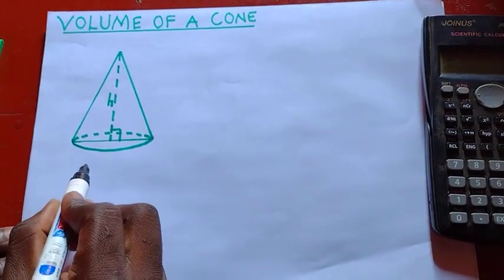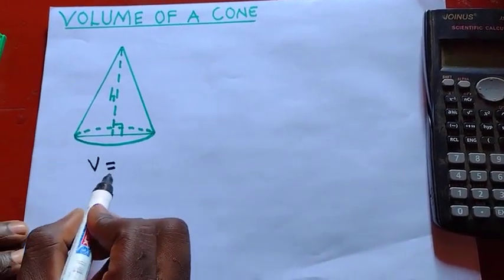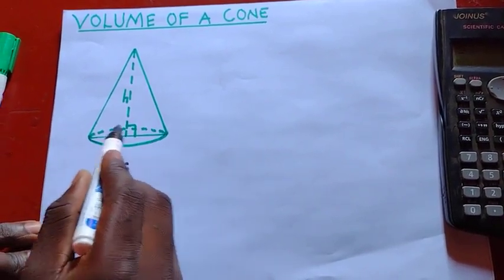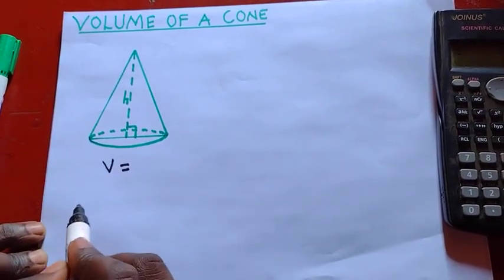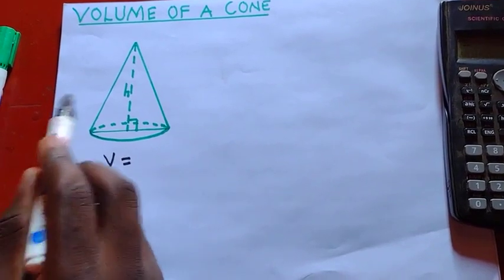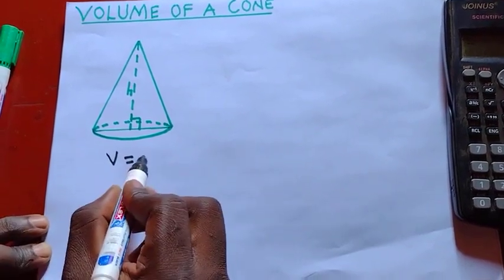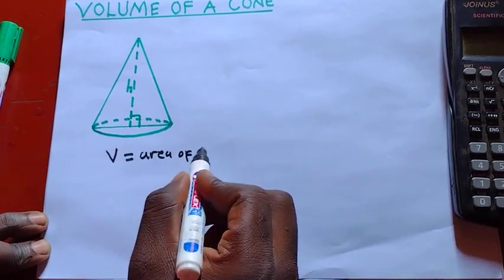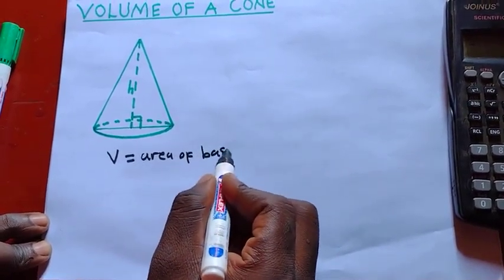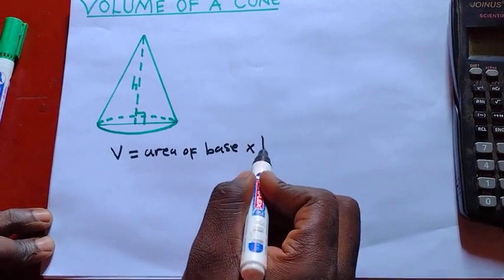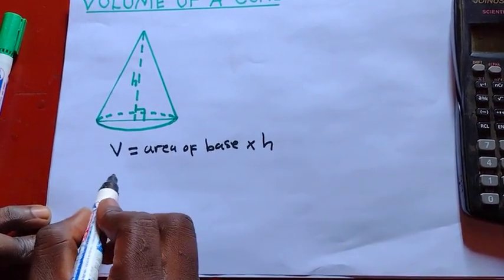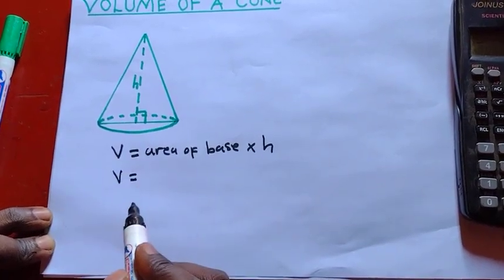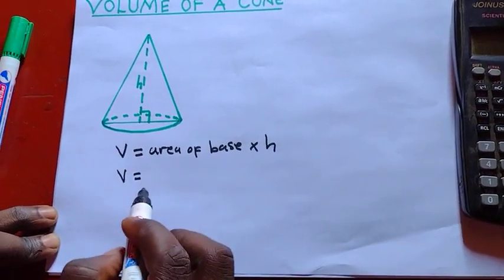Alright, so the volume of the cone is given by this formula, where we say volume equal to... Now, here, you can see the base that you have, this is a circle. So if you want to find the volume of this cone, you are going to say area of base, the area of the base times height. Okay, so in short, we are saying volume equal to... Since this is a circle, what is the formula for area of the circle?